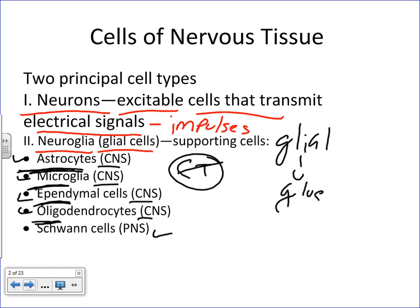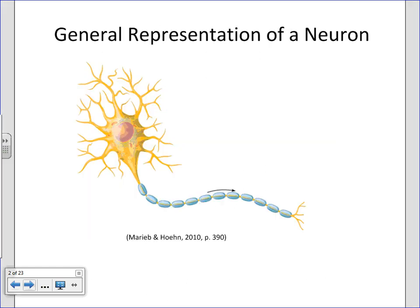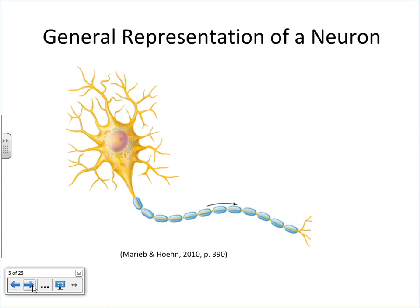Now let's start our discussion about neurons first. Neurons are irritable, excitable cells. This is a general representation of a neuron — it's not exactly how all neurons look. This is probably closest to a motor neuron, which projects out to muscles, skeletal muscles, and glands. Neurons are specialized in communicating to other areas of the body — they are specialized to receive information and send information.